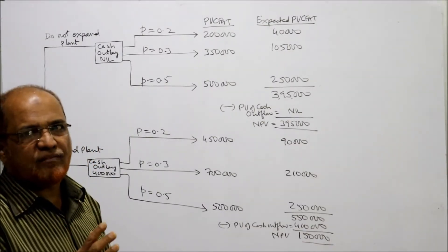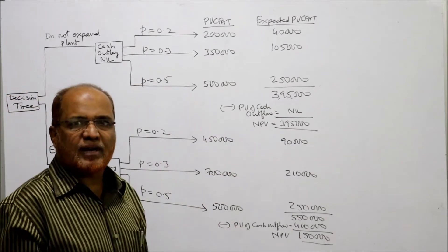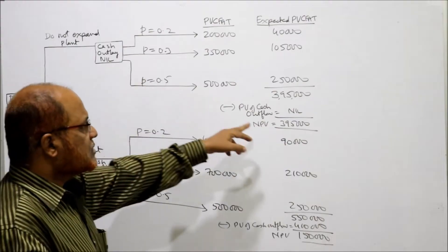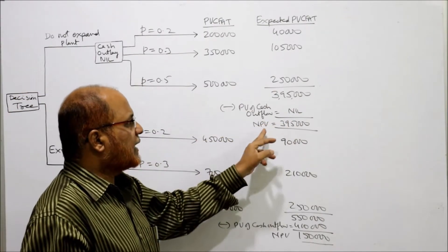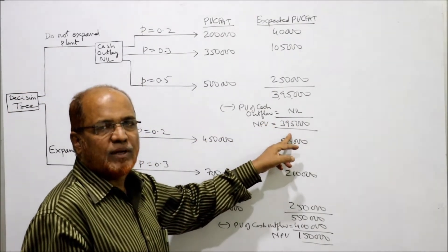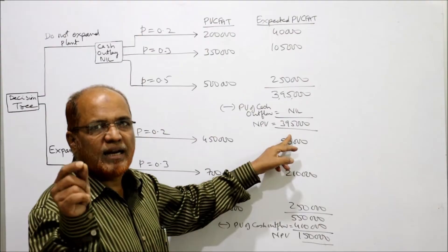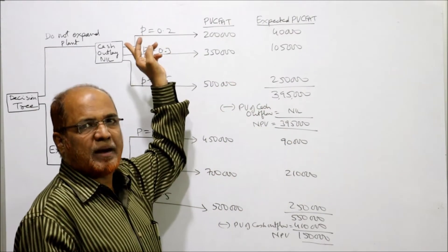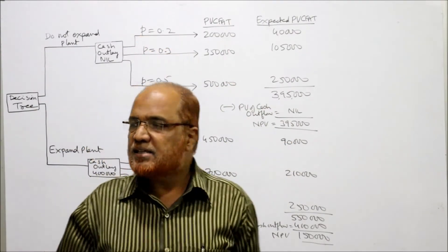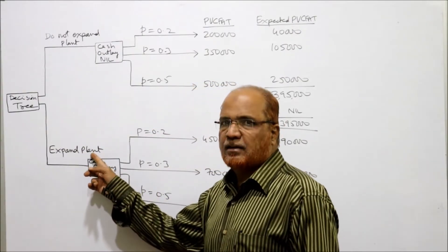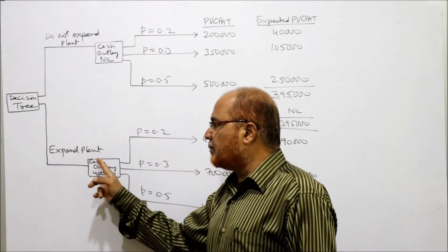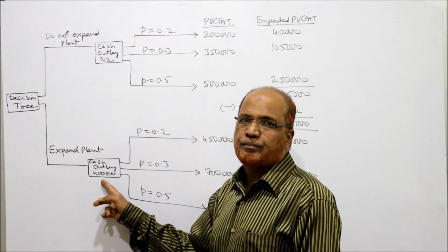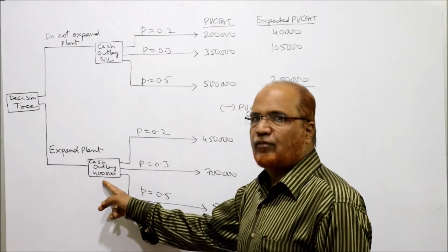This ₹3 lakh 95,000 is the present value of CFAT. From this we subtract PV of cash outflow, which is nil. So we get NPV of ₹3 lakh 95,000. This is the net present value for the alternative do not expand. Similarly, the second alternative is expand the plant, which has a cash outlay of ₹4 lakh.